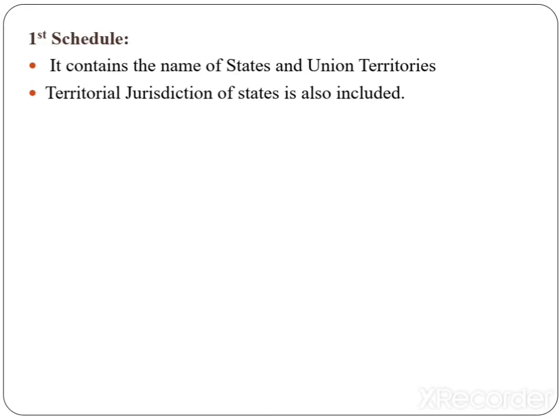Schedule number 1: The first schedule contains the names of the states and union territories. The territorial jurisdiction of states is also included.